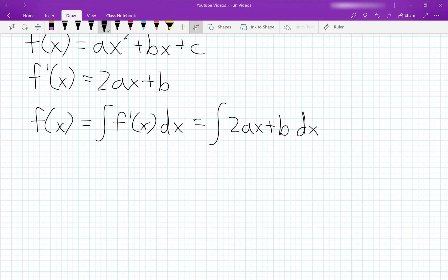So we need to do something very interesting. We turn this indefinite integral into a definite integral from 0 to x of 2at plus b dt.